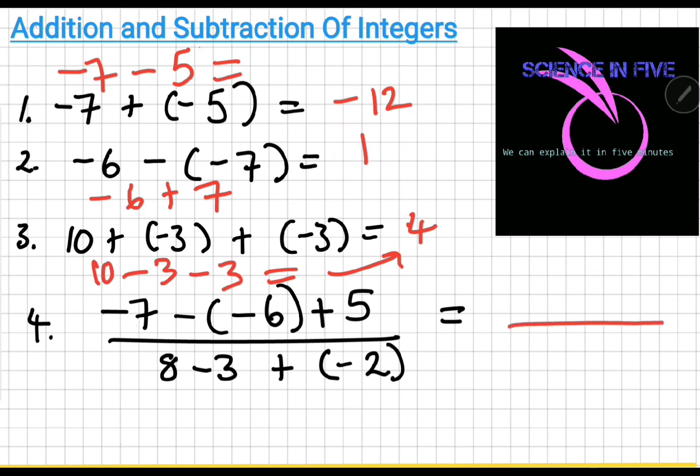Here, let's try to simplify the top part. This becomes minus seven. There are two negative signs so it's minus seven plus six plus five. The bottom part is eight minus three is five plus minus two becomes minus two. Minus seven plus six is negative one plus five over five minus two is three. Minus one plus five becomes four over three.